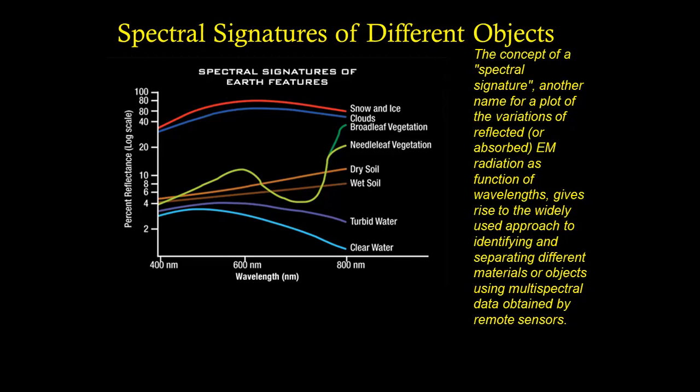the red curve is representing snow and ice. The blue curve is representing clouds. And these are unique and distinct, as are the two different types of vegetation, broadleaf and needleleaf vegetation.